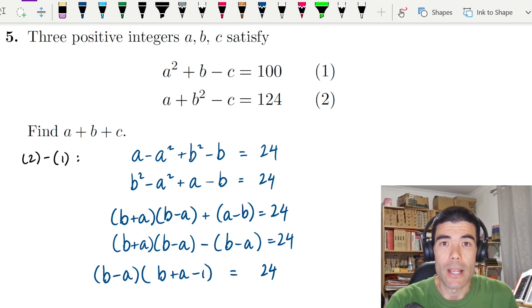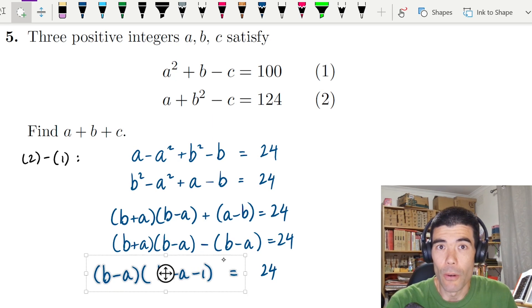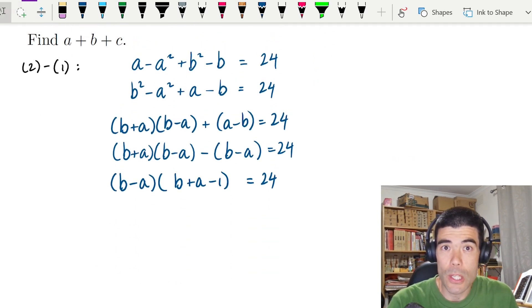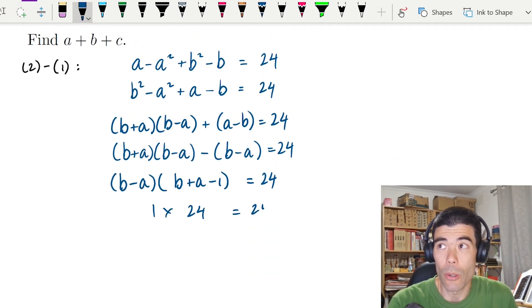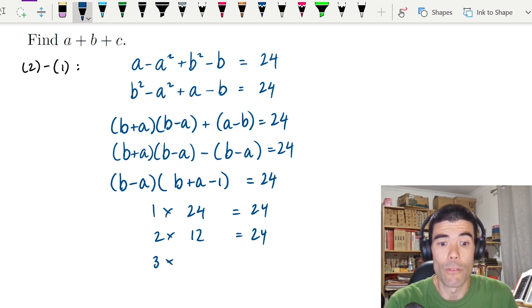That's great. So those two brackets multiplied together must give us 24. And there's only four options for the factors of 24: it could be 1 and 24, 2 and 12, 3 and 8, or 4 and 6.